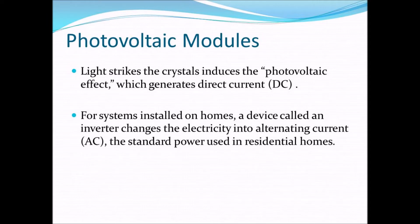Photovoltaics is the direct conversion of light into electricity at the atomic level. Some materials exhibit a property known as the photoelectric effect that causes them to absorb photons of light and release electrons. When these free electrons are captured, an electric current results that can be used as electricity.